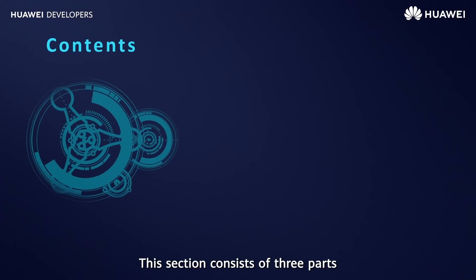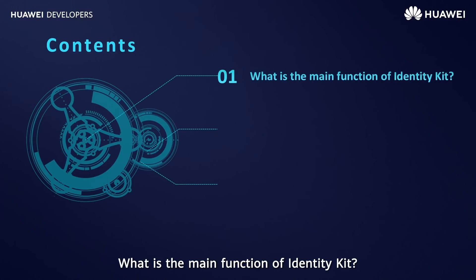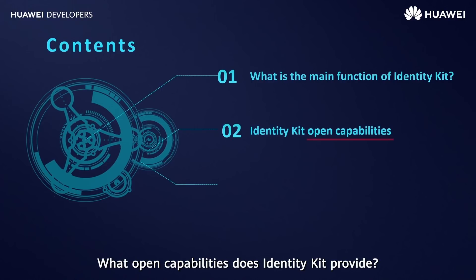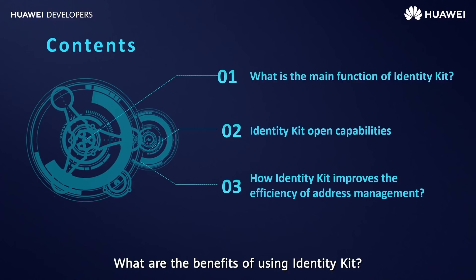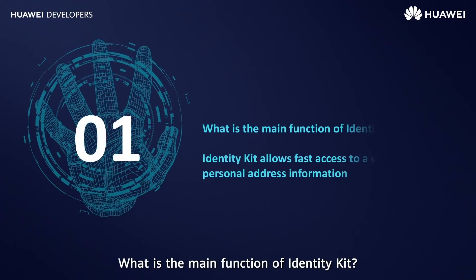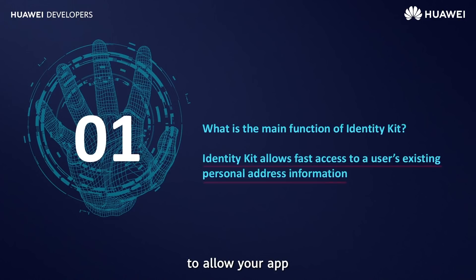This section consists of three parts: what is the main function of IdentityKit, what open capabilities does IdentityKit provide, and what are the benefits of using IdentityKit. IdentityKit provides address selection and management functions to allow your app to access existing user addresses.